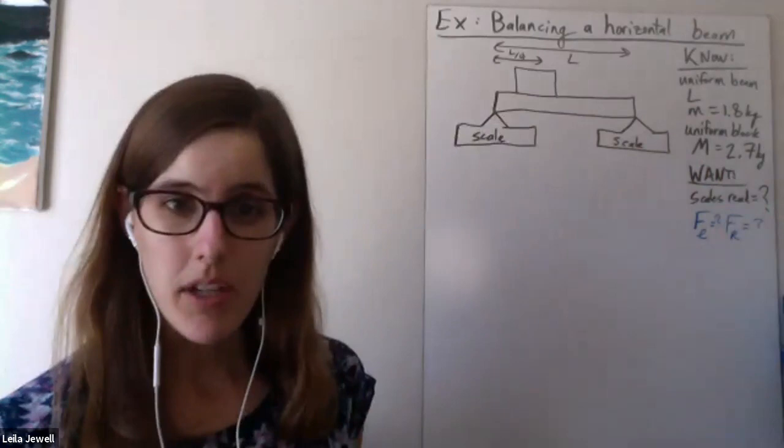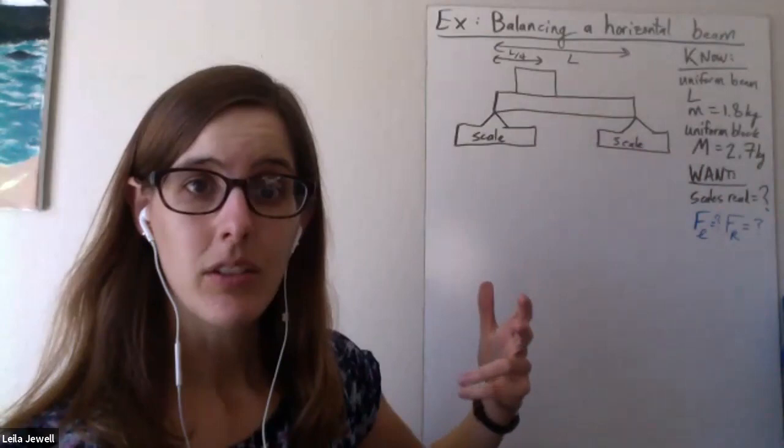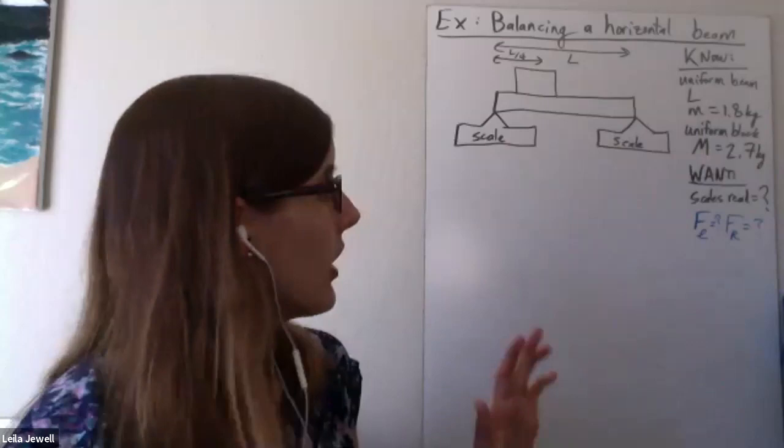Now, do we expect those to be equal? Well, as we look at this, the uniform block, which is pretty heavy, is definitely closer to one scale. So I'd expect that that scale weighs more. But we can check. At the very least, I don't expect it to be balanced.